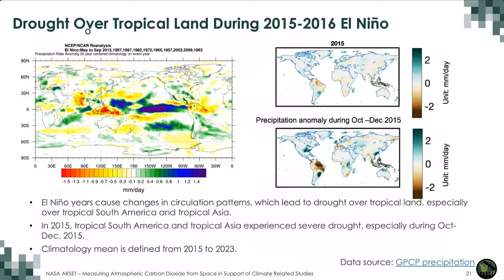2015 to 2016 had the largest atmospheric CO2 growth in these eight years, dominated by reduced net land carbon uptake over the tropics. In the next few slides, I will talk about what happened in 2015 and 2016 and how to interpret the drought signals shown in both CO2 concentration and the surface carbon fluxes.